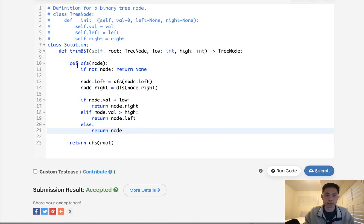So time complexity, O of N. And I guess space complexity is also O of N because we're doing recursion.